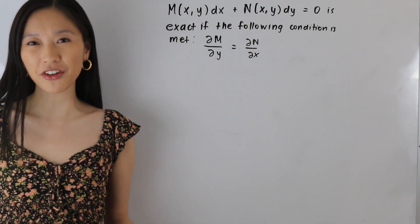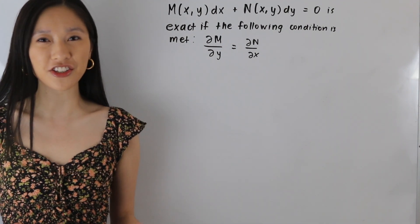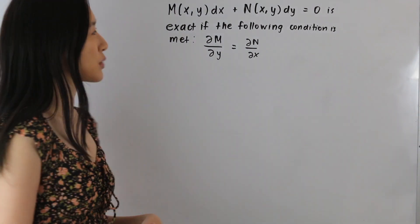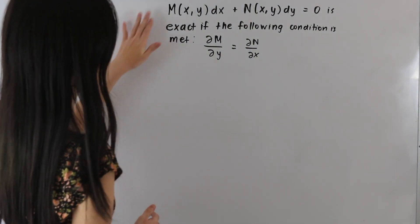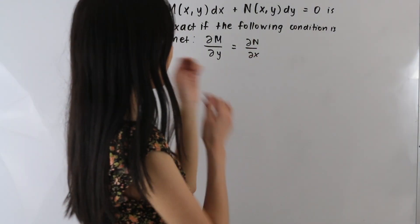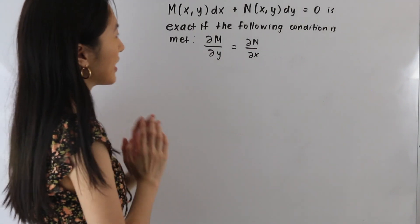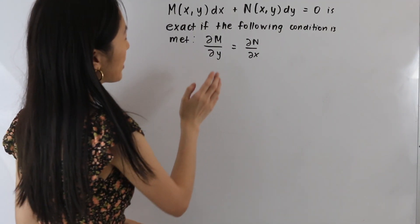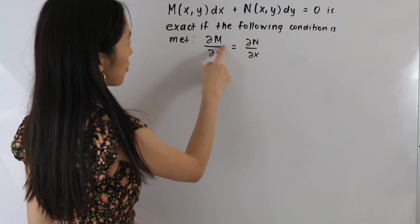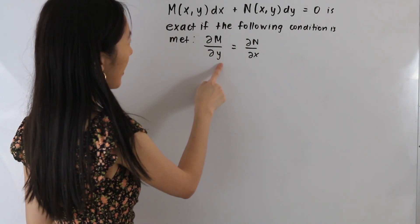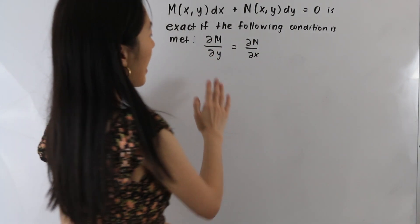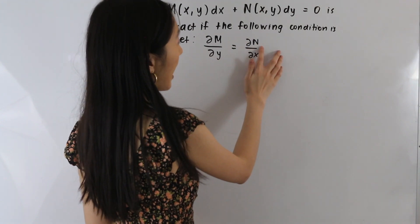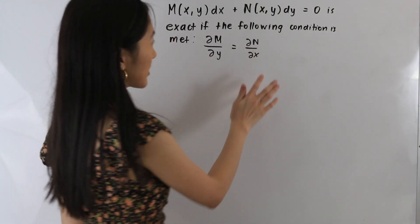You might be wondering, how do we know when a differential equation is exact? We start off with the differential form, and it is exact when the following condition is met: the partial derivative of M with respect to y has to be equal to the partial derivative of N with respect to x.